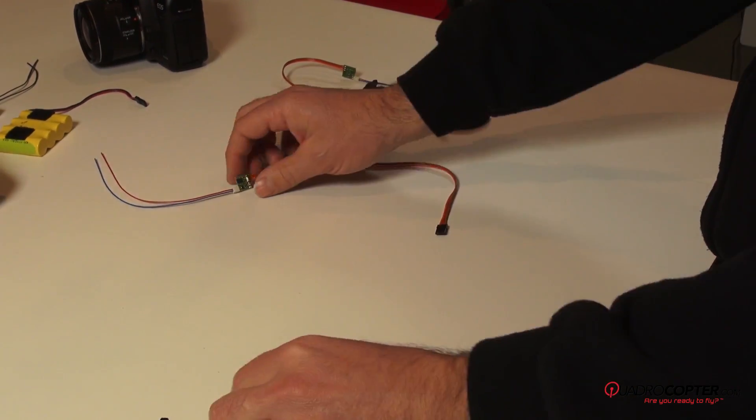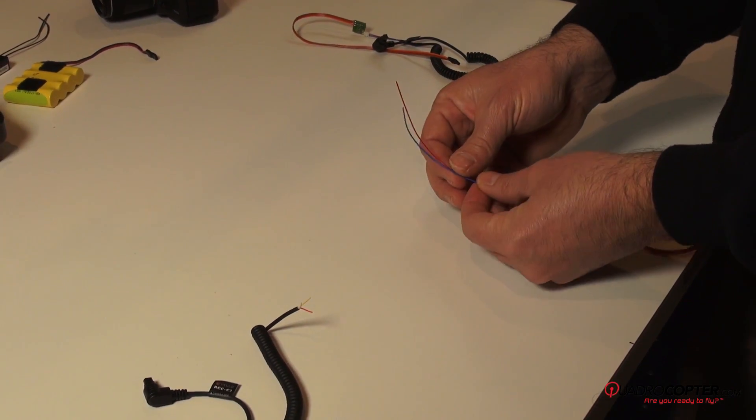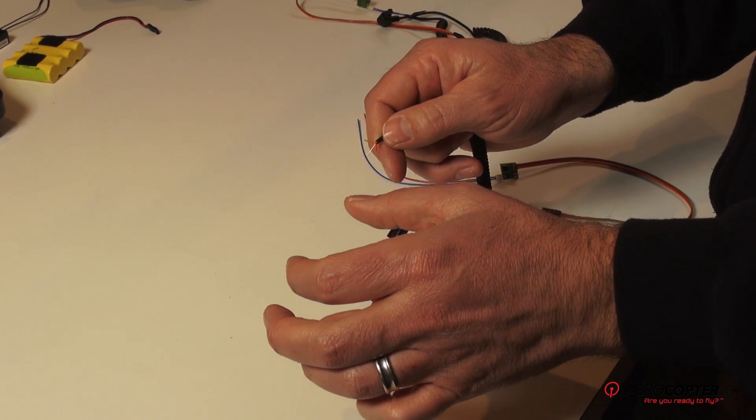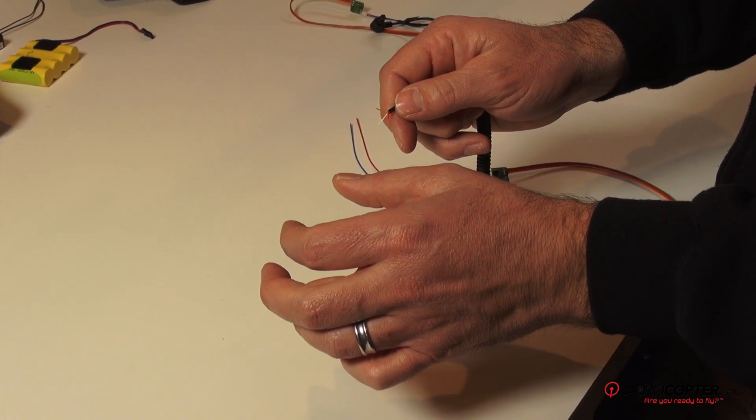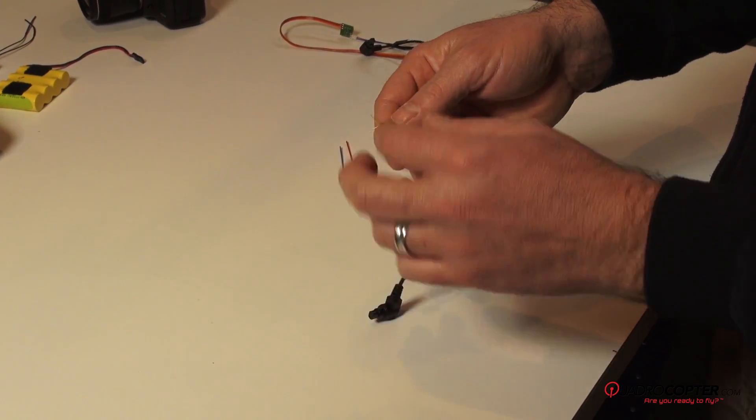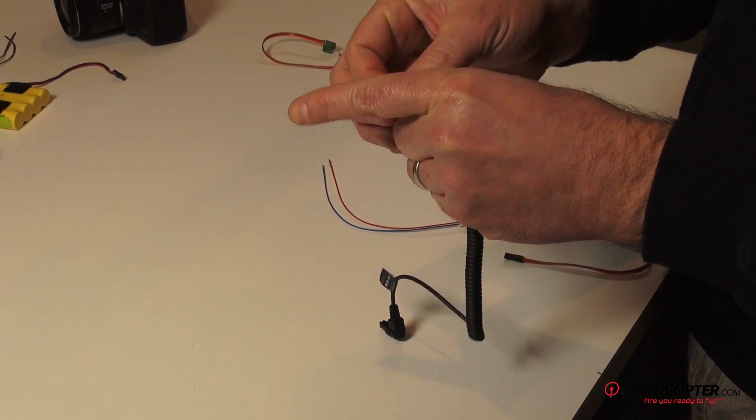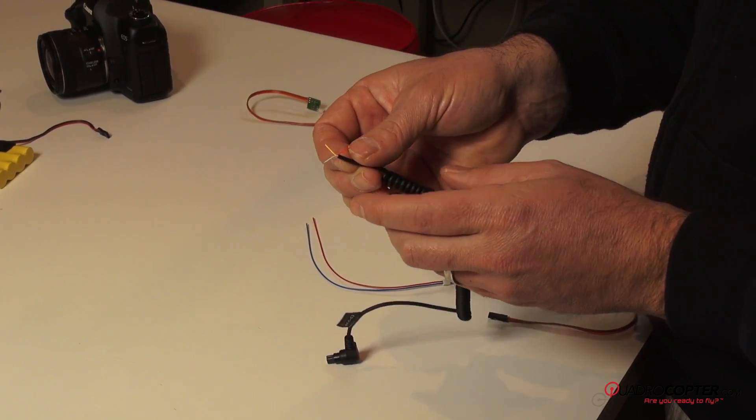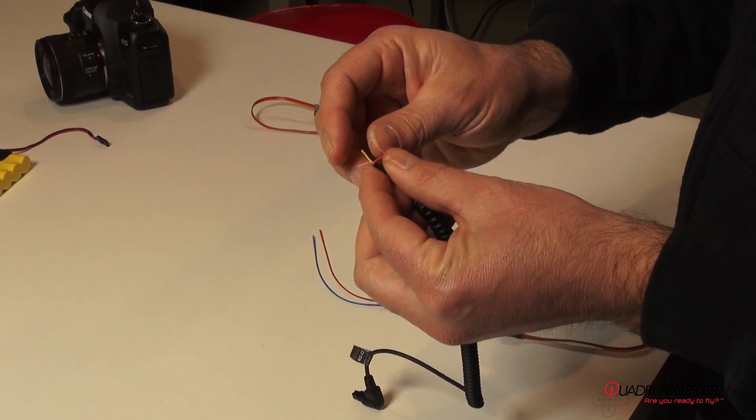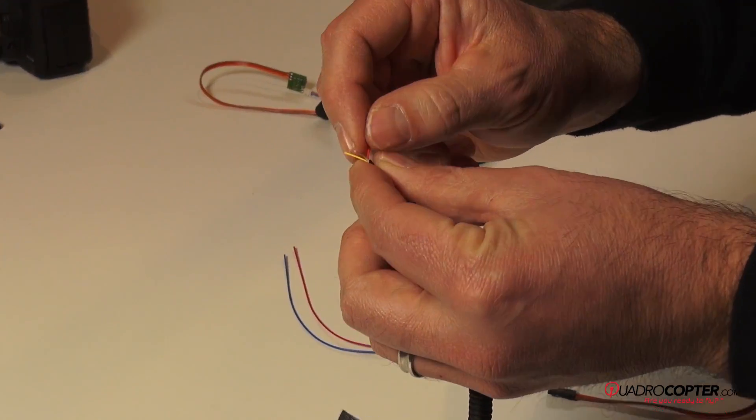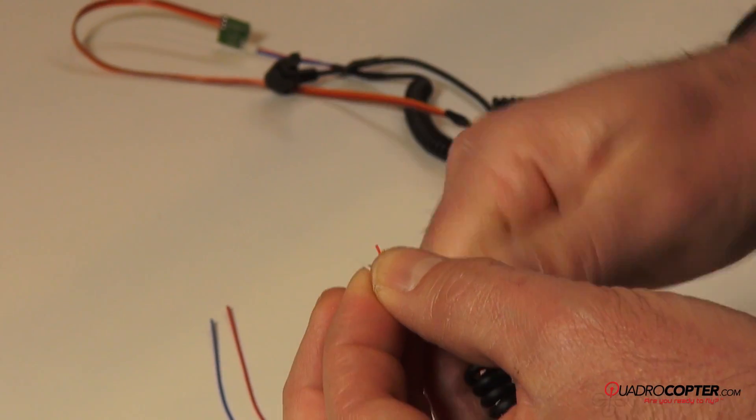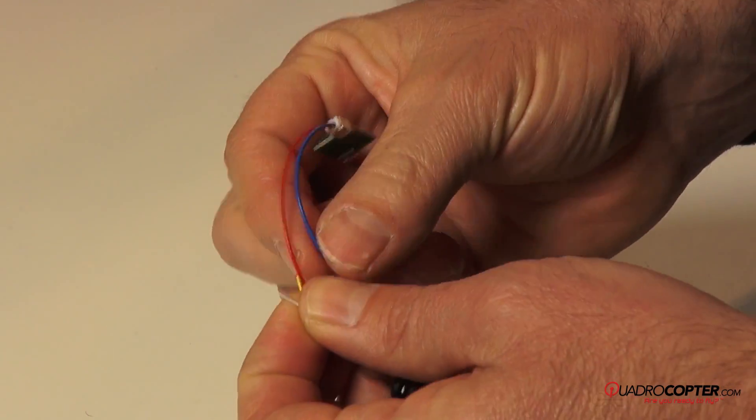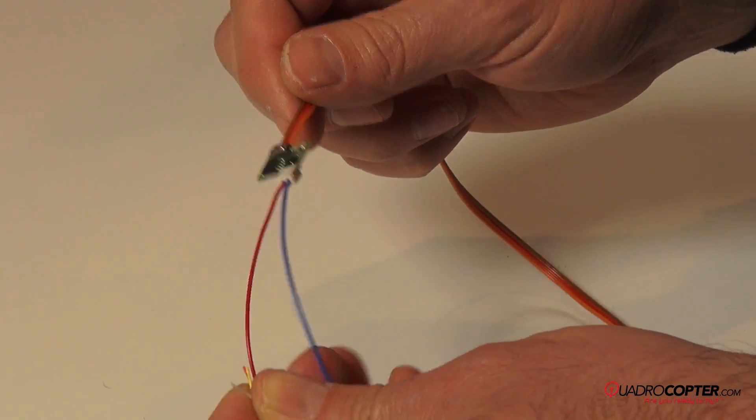So the way I soldered this together is, first, this actually comes with a little eighth inch, I think it's a four pole, but I just crimped that off. What you're going to find is a white wire, a yellow wire, and a red wire. For soldering this together, I just take a little bit of insulation off the red and the yellow wire, twist that together, solder that directly to this red wire going to the RC Flysoft.